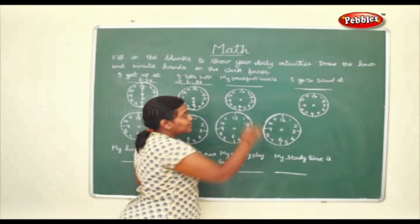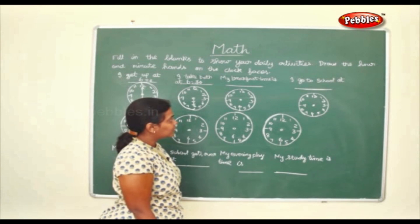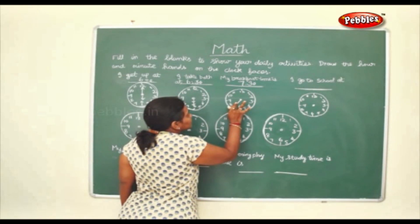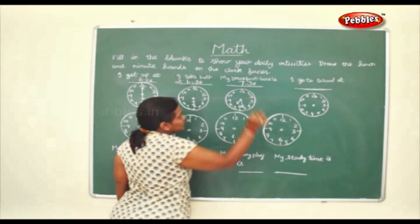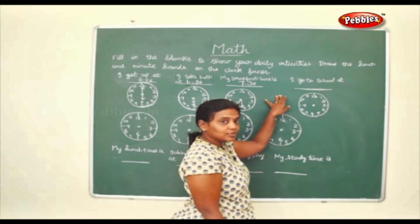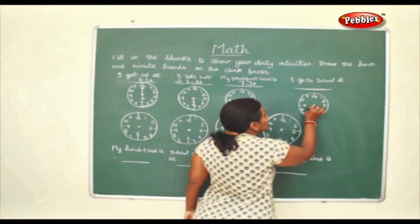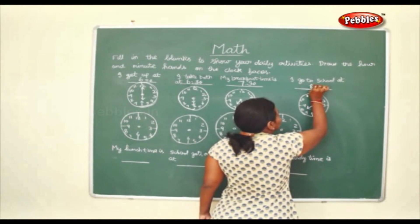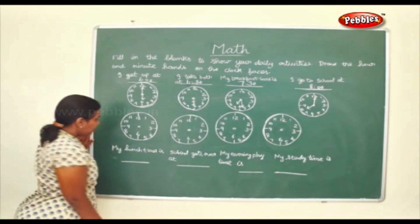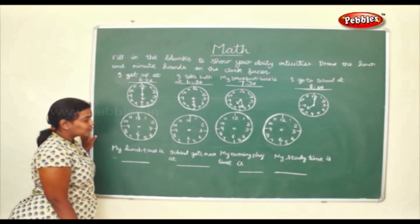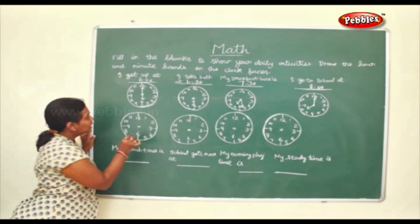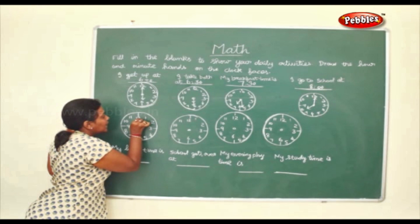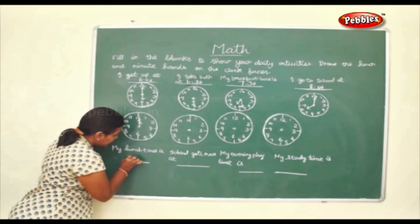Breakfast time — shall we say 7:30? Yes, we write 7:30. I go to school at 8 o'clock, though for each child it is different. Then your lunch time — when do you have lunch at school? Some schools at 12, some at 11:40, some at 1. We will take 12 o'clock as lunch time, so both the hands are in the same place at 12.